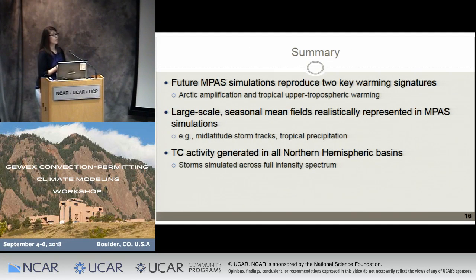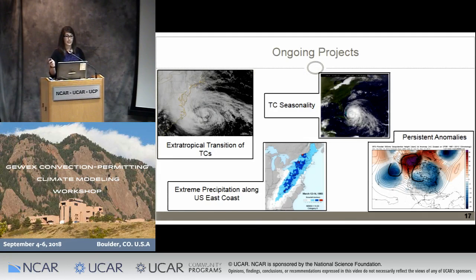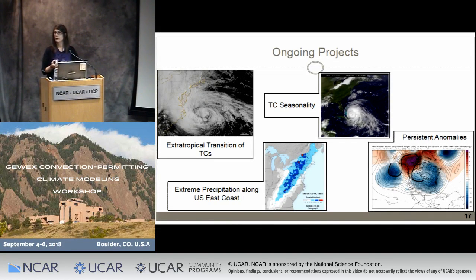In summary, our future MPAS simulations replicate the two key warming signatures seen in GCMs — Arctic amplification and the warming maximum in the tropical upper troposphere — just by warming the lower boundary and increasing CO2. We're getting realistic representation of large-scale mean fields like mid-latitude storm tracks and tropical precipitation. TC activity is generated in all northern hemispheric basins, and based on sea level pressure, we're getting storms across the full intensity spectrum. The primary goal of my portion of the project is to do the model runs and look at climate change effects on the extratropical transition of TCs, with other ongoing projects in the group examining extreme precipitation on the U.S. East Coast, changes in TC seasonality, and persistent anomalies or blocking events.